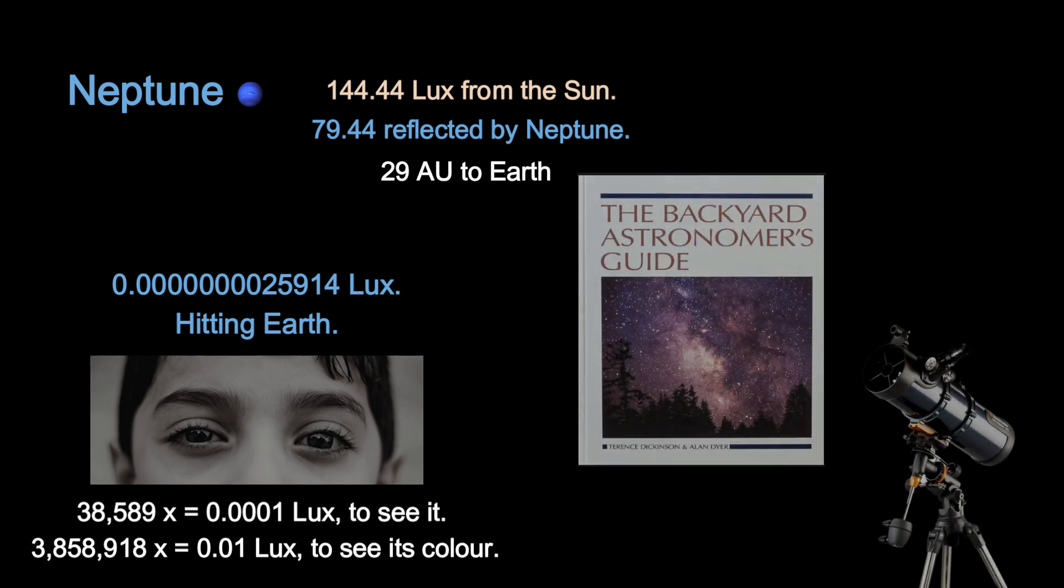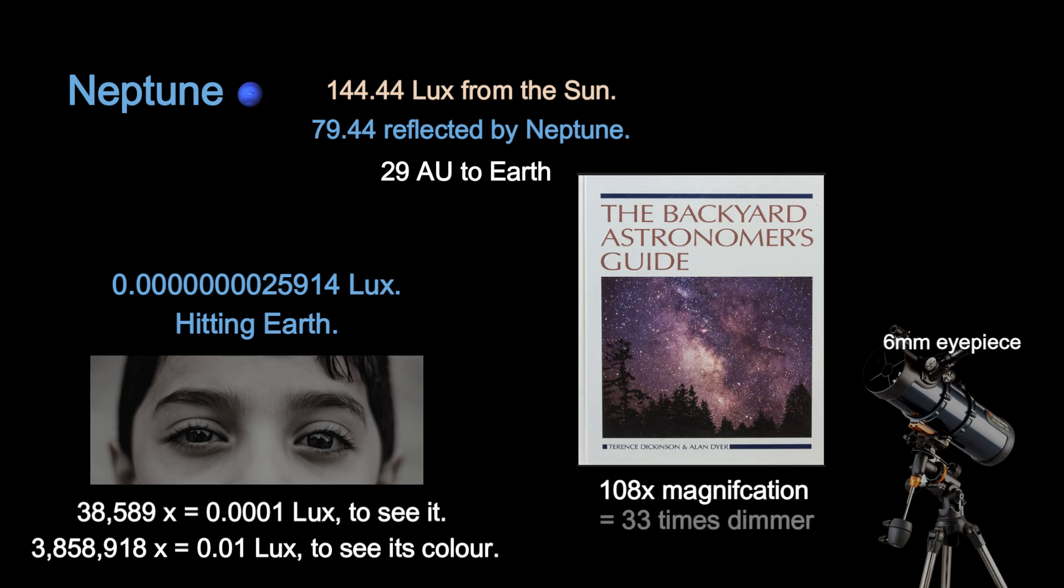The Backyard Astronomer's Guide recommends around 100 times or more magnification to see Neptune and its color. The problem is, this will be well above the equal brightness magnification. The light from Neptune will be 33 times less than with the naked eye.